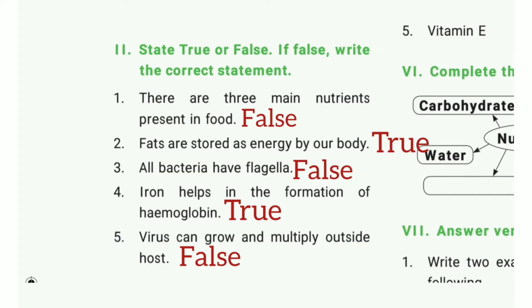Fourth one: iron helps in the formation of hemoglobin. The answer is true. Fifth one: viruses can grow and multiply outside hosts. The answer is false.